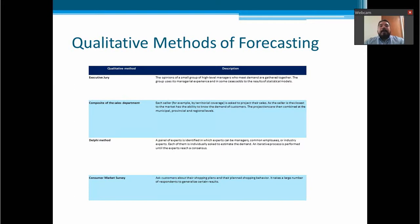For example, in a qualitative method of forecasting, we say that this could be an executive jury. This means that the opinion of a small group of high-level managers who meet demand are gathered together. The group uses its managerial experience, in some cases, with the result of statistical models. This means that we gather people from the sales department, from the production or operation department, from accounting. And as a group, we analyze the demand as a phenomenon.